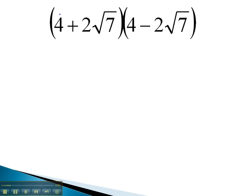In this case, we simply have to multiply the first terms, 4 times 4, to get 16, and the last terms, 2√7 times 2√7. 2 times 2 is negative 4, and under the square root we have 49.